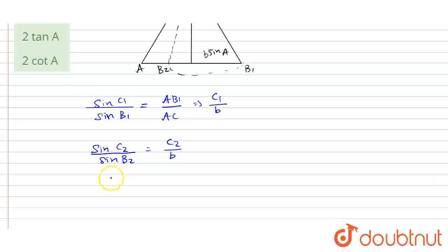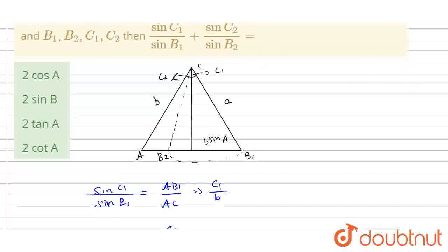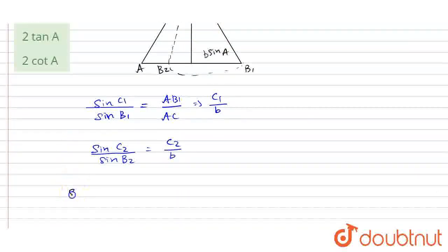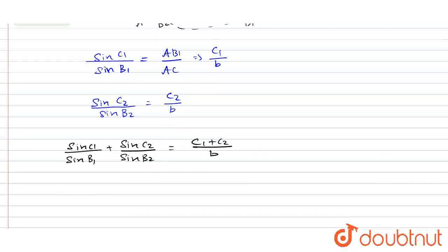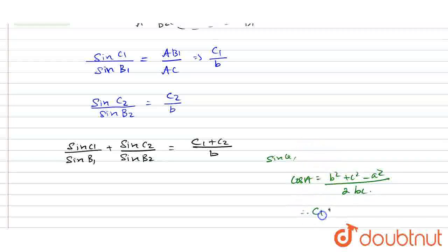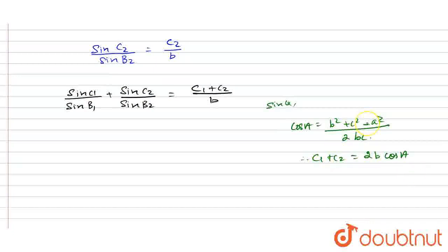Therefore, I am going to add both terms. In our question, sinC1 divided by sinB1 plus sinC2 divided by sinB2 equals C1 plus C2 divided by B. Now, using the cosine rule: cosA equals B² plus C² minus A² all divided by 2BC. Therefore, C1 plus C2 equals 2B cosA.